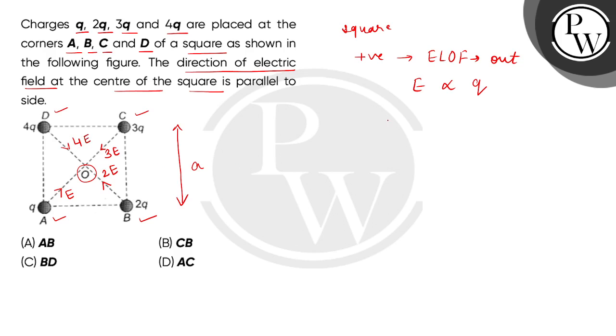Now in a square, when we take the diagonals, as we know, the diagonals bisect each other at 90 degree angle.